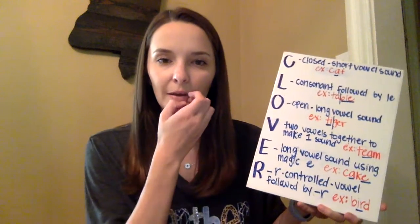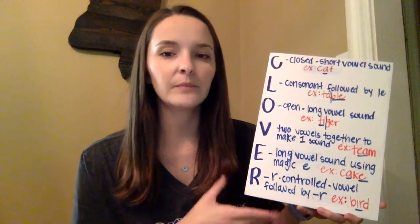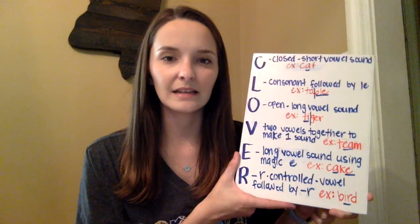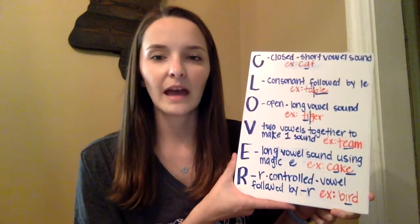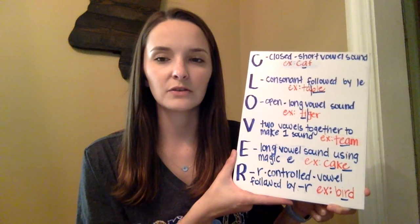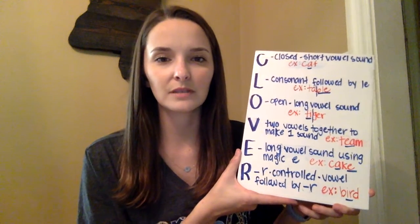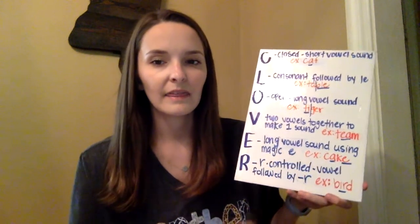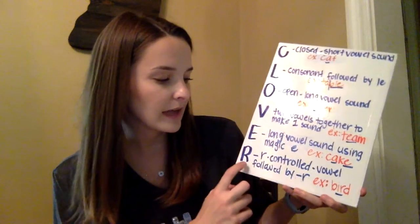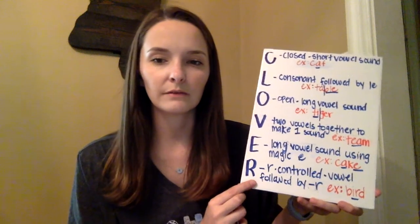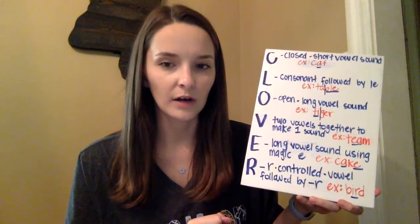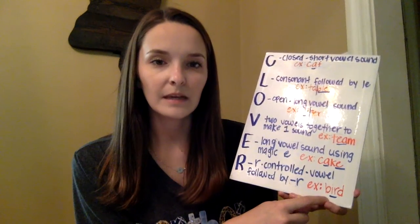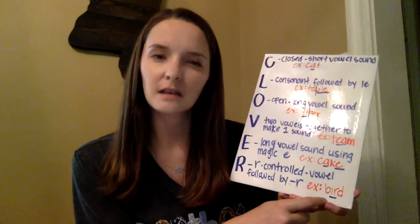V stands for when there are two vowels teamed up together to make one single sound. The example we used is 'team' — the E-A together says 'ee.' Then we have E, which is the magic E — that E makes the vowel say its name. The example is 'cake': the magic E makes the A say its name. Finally, R stands for an R-controlled vowel — a vowel followed by an R. Our example is 'bird.' R-controlled can be A-R, E-R, I-R, and sometimes U-R.